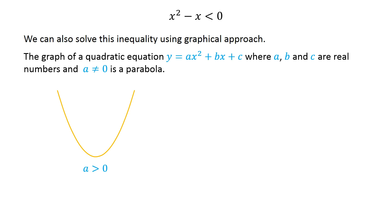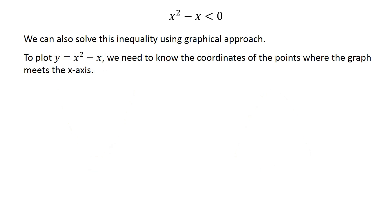The sign of a determines whether the parabola opens up or down: if a is positive the parabola opens up, and if a is negative it opens down. To plot y equals x squared minus x, we need to know the coordinates of the points where the graph meets the x-axis.